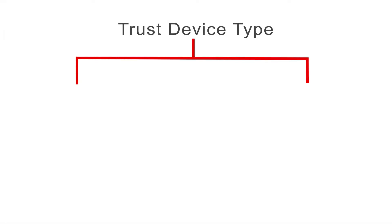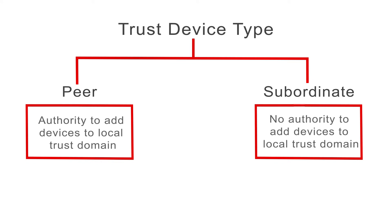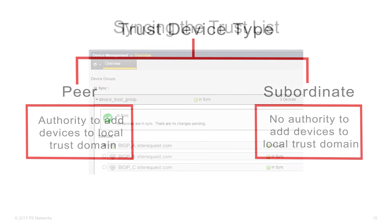When you build the list of devices that you want to trust each other, you designate each device as either a peer device or a subordinate device. The main difference is that a peer device has the authority to add devices to the local trust domain, but a subordinate device does not. You typically want to include at least two peer devices for your future device group in case one of them goes offline, but giving trust authority to too many devices can be a security risk.